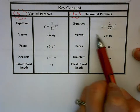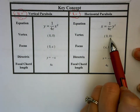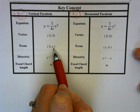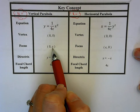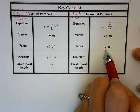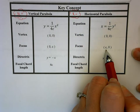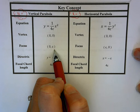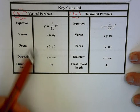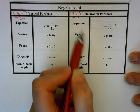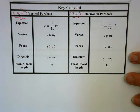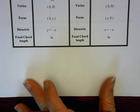The vertex is still at (0,0). For a vertical parabola, the focus is at (0, c) — the y value changes. For a horizontal parabola, the focus changes along the x-axis, so the x value changes. The directrix is y equals (negative c) for vertical parabolas, and x equals (negative c) for horizontal parabolas. The focal chord length remains 4c in both cases.